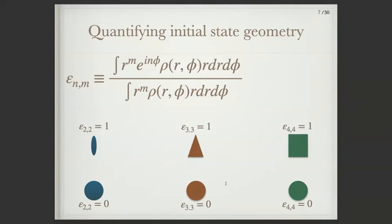To break this down — and Chuji's talk touched on eccentricities — I want to get into more details of what that actually is. Essentially, what you do is integrate over the density of your initial state with weighting factors. You have n, which relates to your flow harmonic. A factor of two gives you elliptical shape, relating to your final V2. If eccentricity equals one, it's extremely elliptical — basically a line — and if it equals zero, you have a perfect circle.